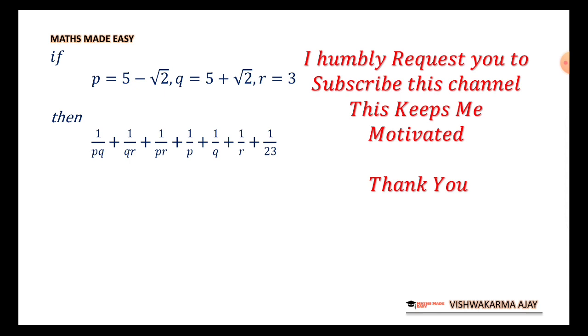We know the value of p as 5 minus root 2 and the value of q as 5 plus root 2, and we need to find the value of this whole expression: 1 upon pq plus 1 upon qr plus 1 upon pr plus 1 upon p plus 1 upon q plus 1 upon r plus 1 upon 23.